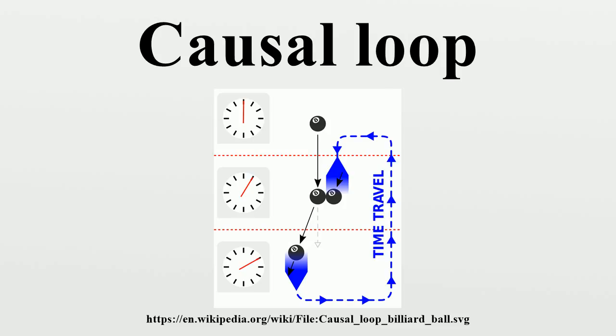The lack of constraints on initial conditions only applies to spacetime outside of the chronology-violating region of spacetime. The constraints on the chronology-violating region might prove to be paradoxical, but this is not yet known.